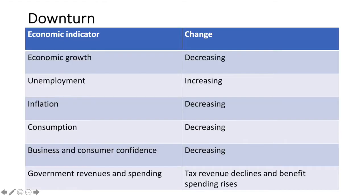During an economic downturn, such as the early days of the 2008 crisis, economic growth slows down. This could be due to different shocks to the economy that in some cases are difficult to anticipate. As things start slowing down and output decreases, unemployment starts to rise. With falling spending, pressure on prices falls and the inflation rate will decrease. Consumers and business confidence will fall as output falls and unemployment rises. The government will increase their spending on benefits while receiving less in tax revenues.